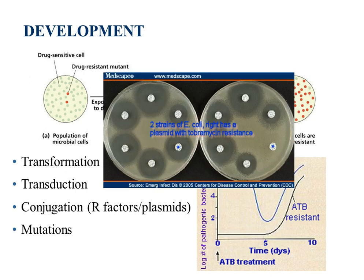Here's a good look at an E. coli culture. It's the same strain of E. coli on the left and right, except the one on the right has resistance — associated with a plasmid — to an antibiotic called tobramycin. On the left, the strain is sensitive to tobramycin, but on the right it is resistant. Notice that it has roughly the same sensitivity to the rest of the five other drugs on the plate.